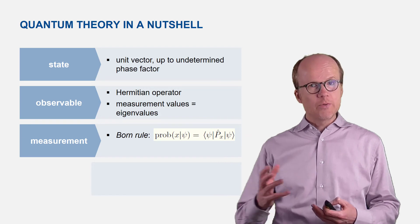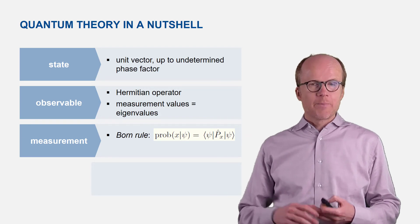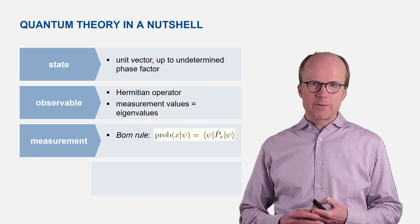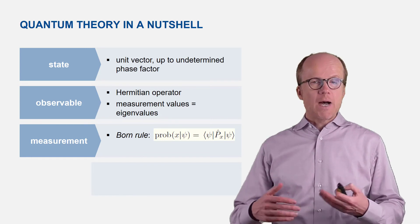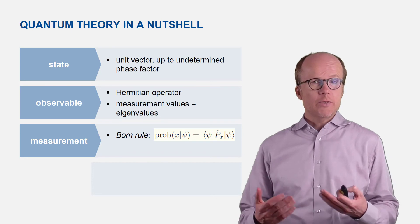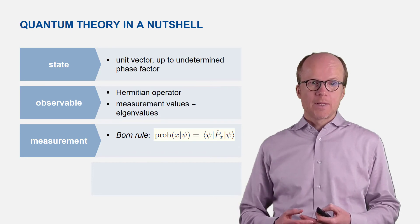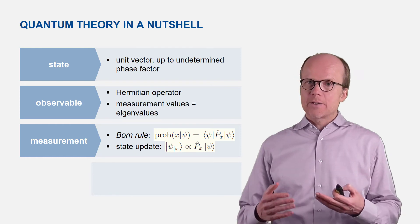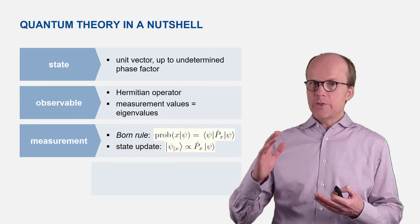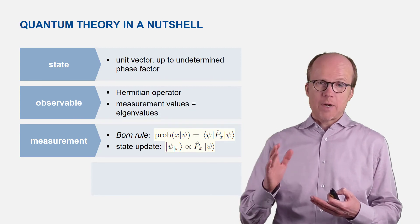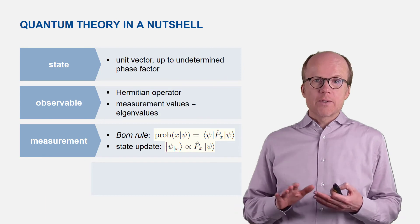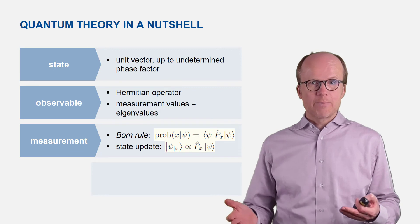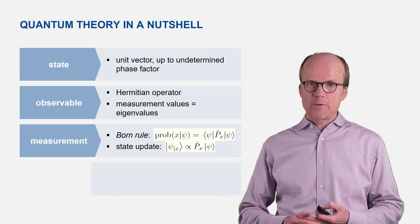There is a second aspect to measurement in quantum physics which you do not have in classical physics: a measurement generally changes the state of the system. So after a measurement you have a new state — you have to update your state. Mathematically, this is described as a projection of the original unit vector onto the eigenspace corresponding to the measurement value you have just obtained.